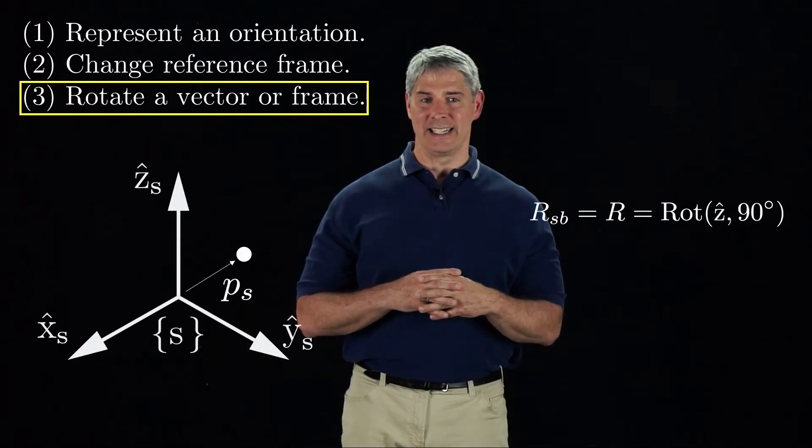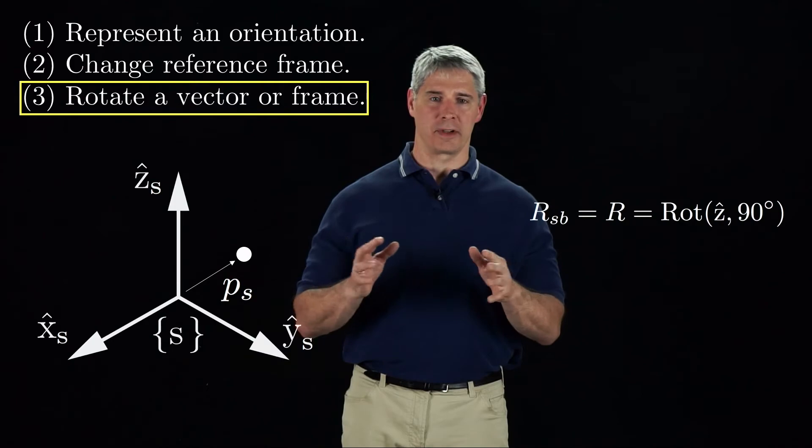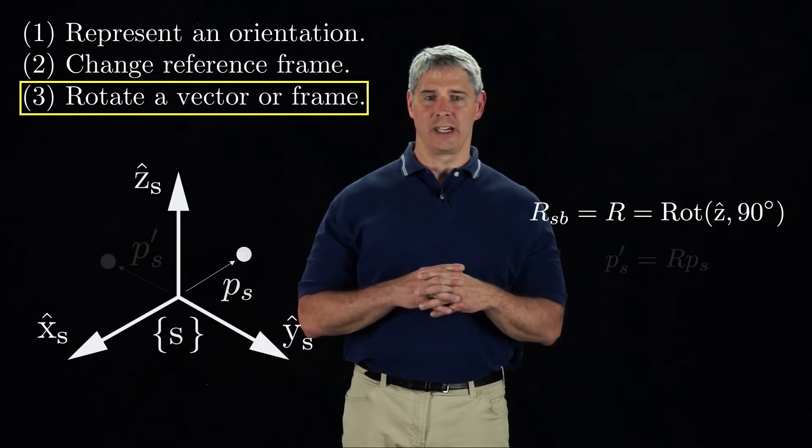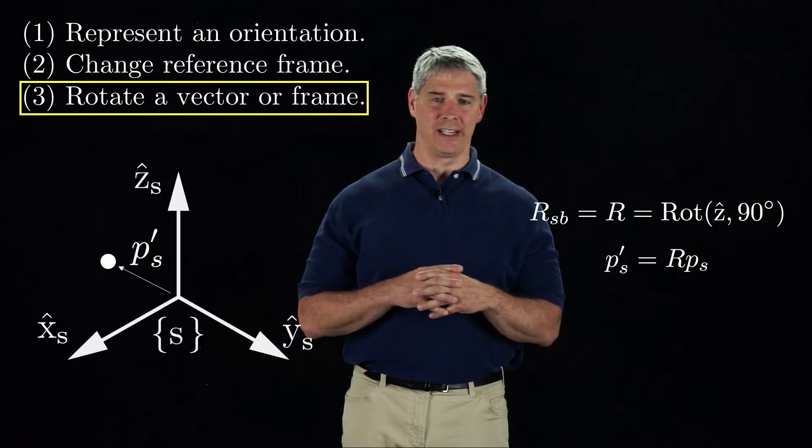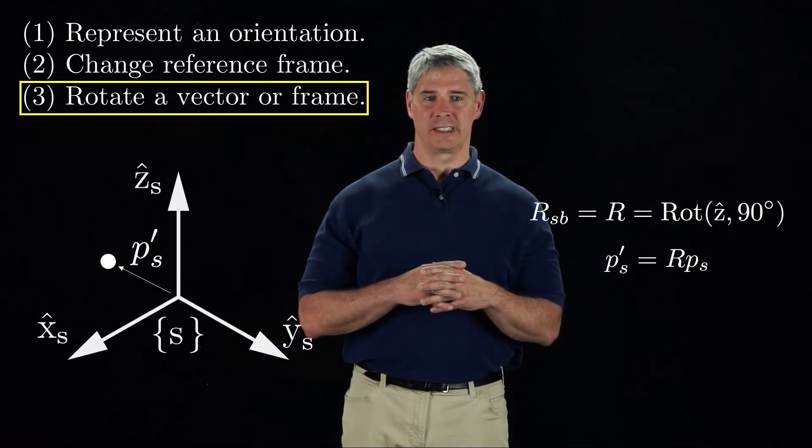But if the vector is PS in S coordinates, then there is no subscript cancellation, and instead we get a new vector, P prime S, obtained by rotating PS by 90 degrees about the ZS axis. The vector has been rotated, but it is still represented in the original frame S.